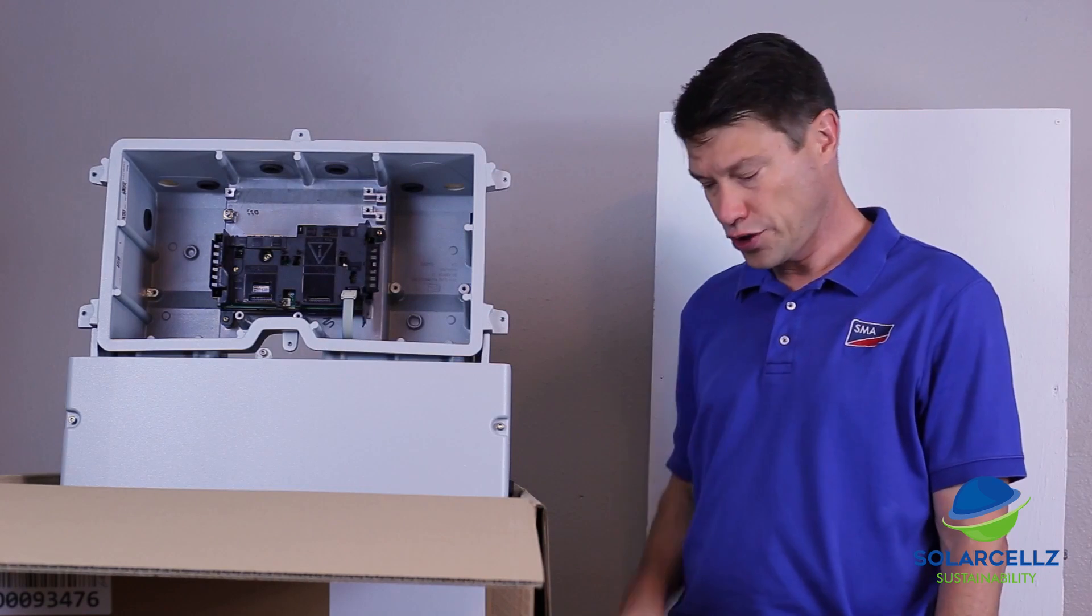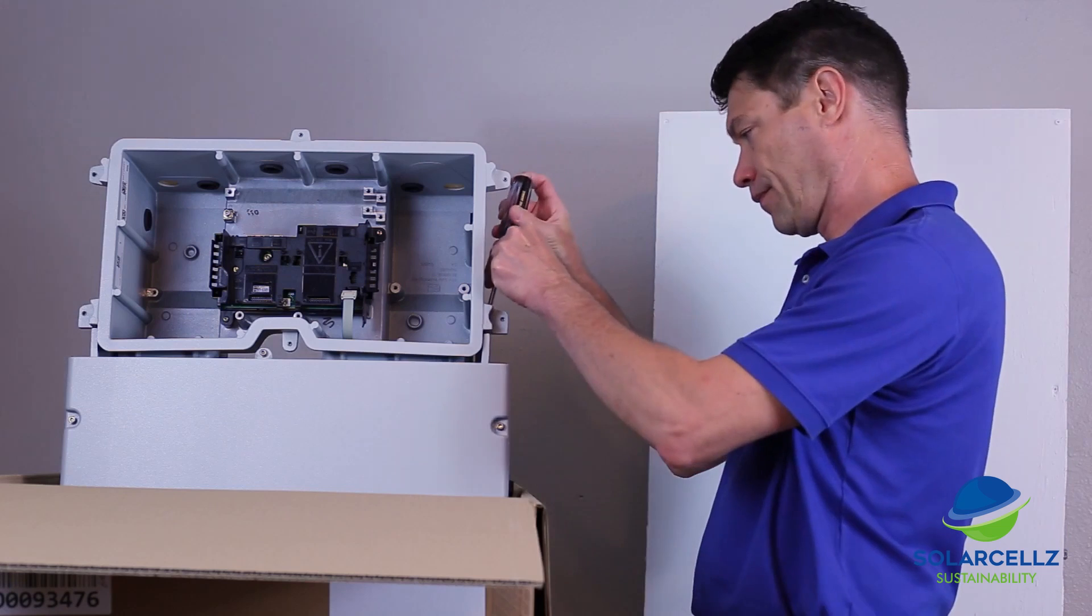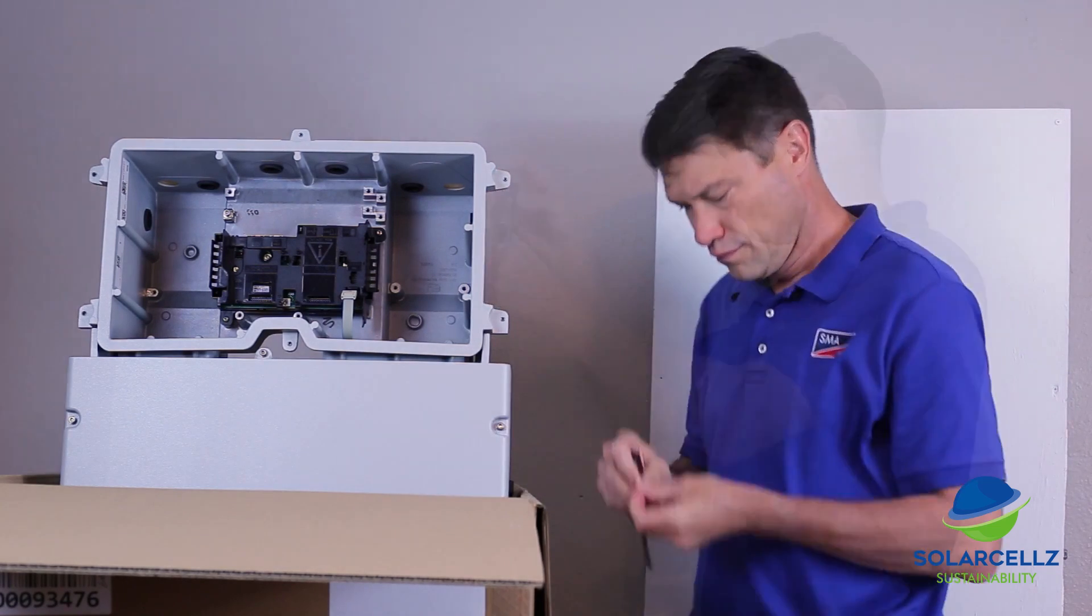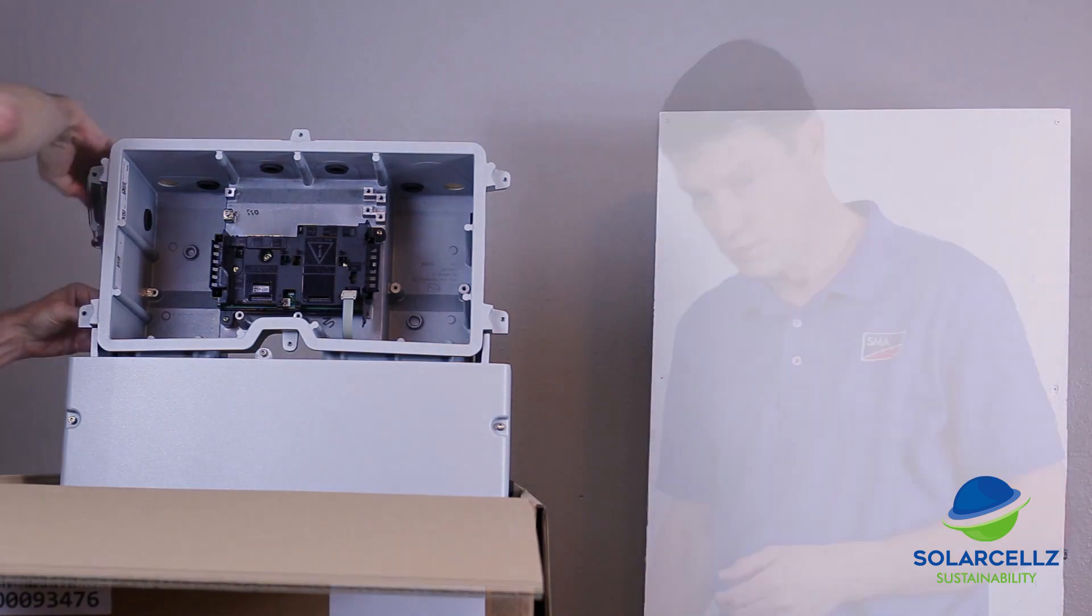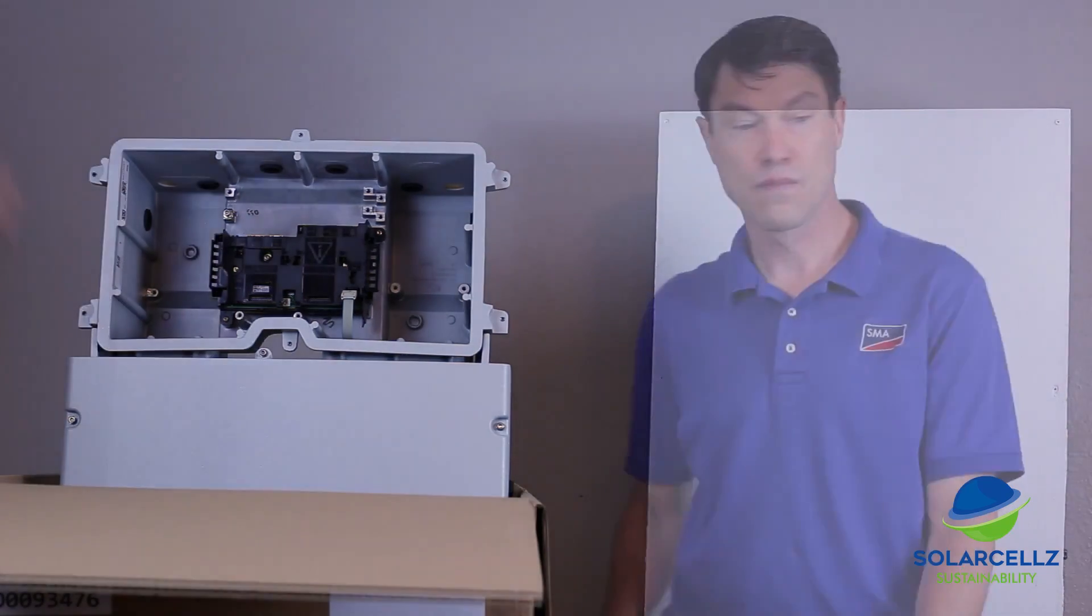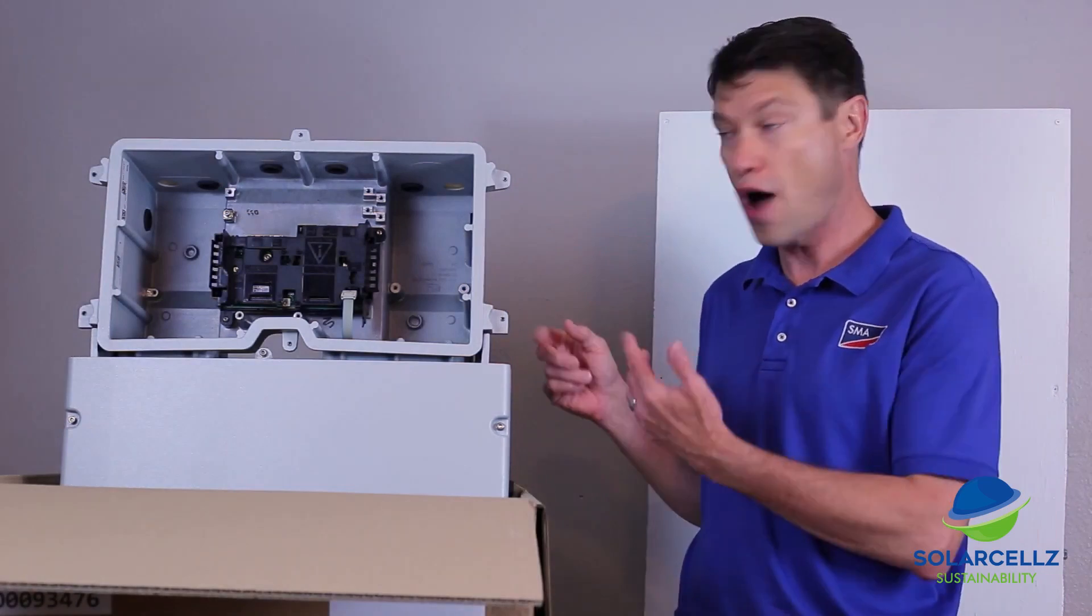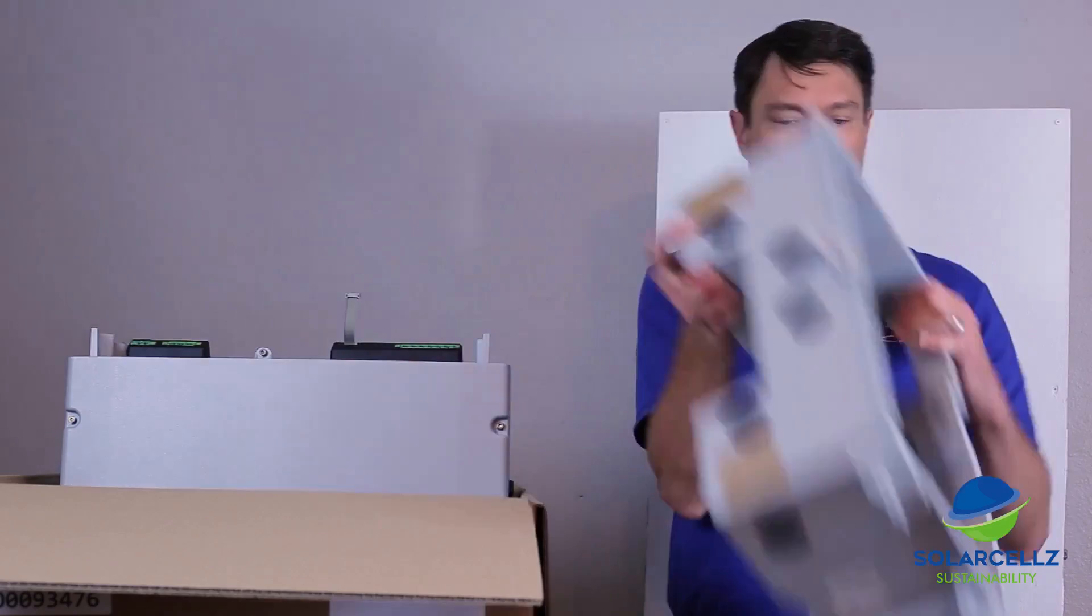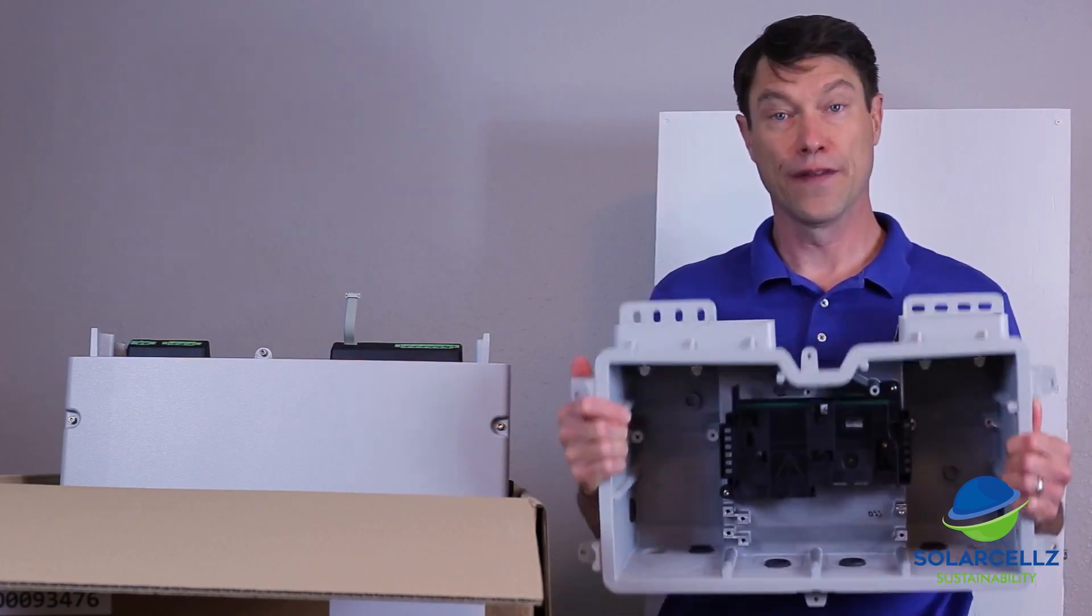Now we're ready to loosen the four Torx 25 screws that actually hold the connection unit to the power unit. When we've removed all four screws, we're ready to gently lift the connection unit off of the power unit. And now we're ready to mount the connection unit on the appropriate surface.